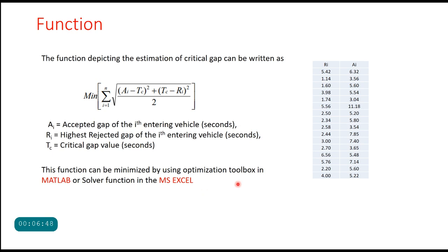Let us take an example. These are the pairs of rejected gap and accepted gap of drivers at a roundabout. All these values are taken from the field: highest rejected gap and finally accepted gap.